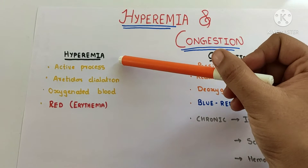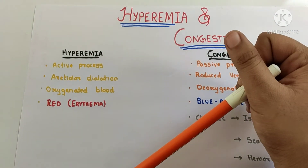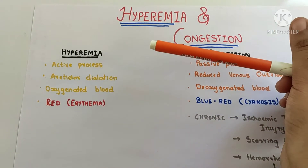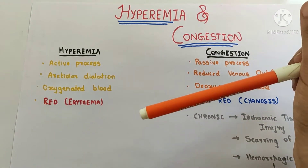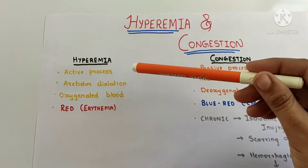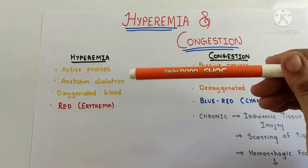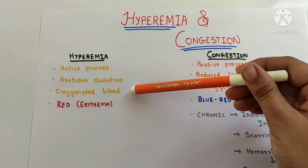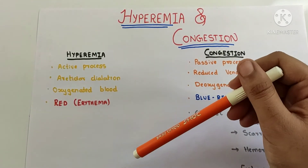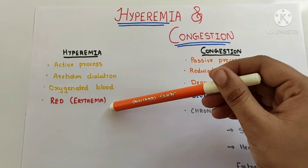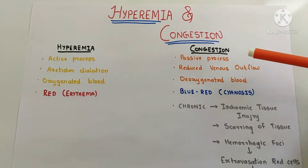Hyperemia is an active process which occurs due to arteriolar dilatation, which can occur in skeletal muscles during exercise or due to inflammation. Due to arteriolar dilatation, the tissue gets an excess amount of oxygenated blood. Hence the tissue becomes red in appearance, which is known as erythema.